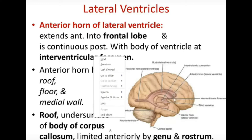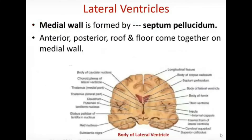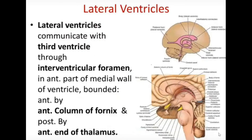The corpus callosum continues lower down as the rostrum, which lies below the anterior horn, while the genu lies anteriorly to the anterior horn. The remaining part of the corpus callosum forms the roof of the anterior horn. Looking at the lateral section diagram, the genu limits the anterior horn, and on the other side of the septum pellucidum is the anterior horn of the right ventricle.